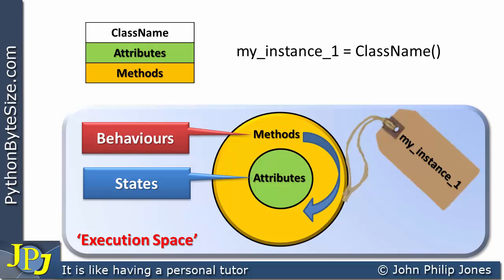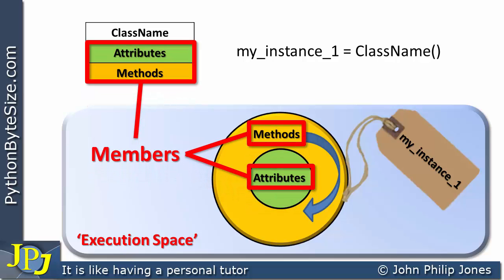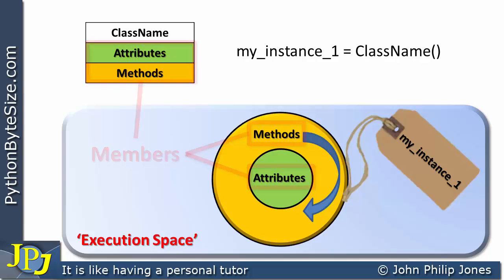You will also often hear the following terminology applied to classes and objects, and that is members. And what we're really saying here is that attributes and methods are members of the class, and they are also members of the object. Because if they're members of a class, they're going to appear in the object, because the object is based on the class.